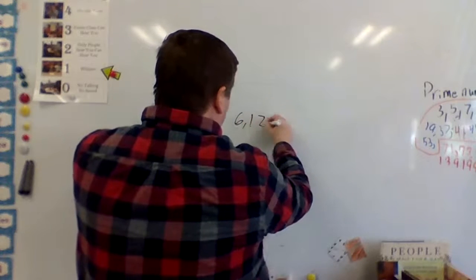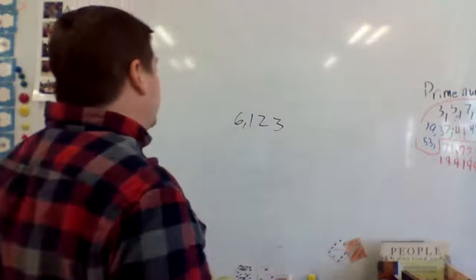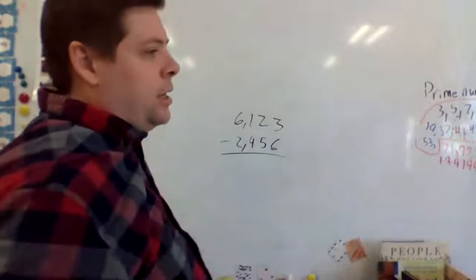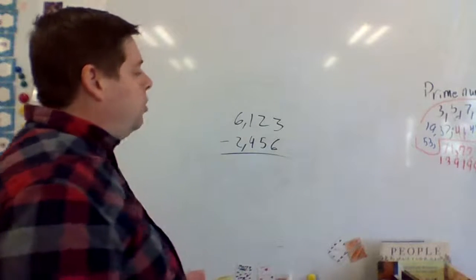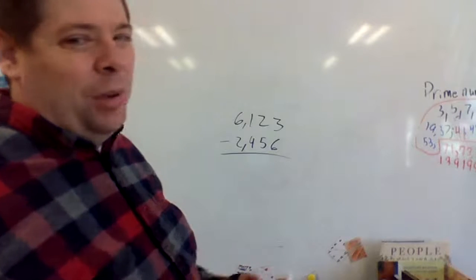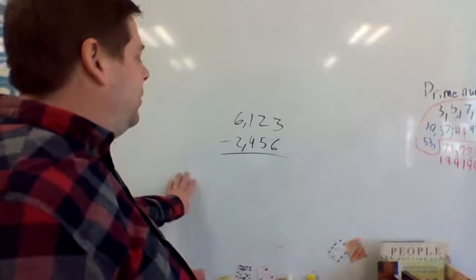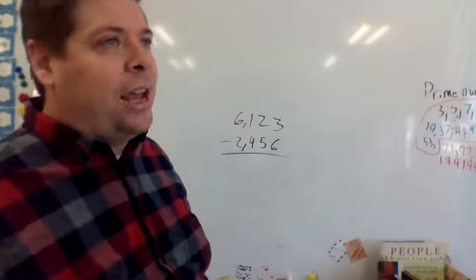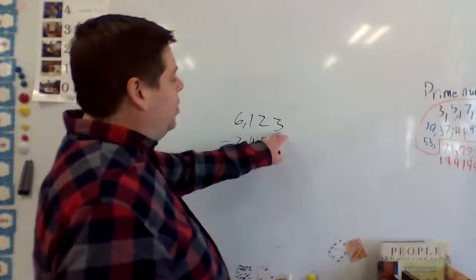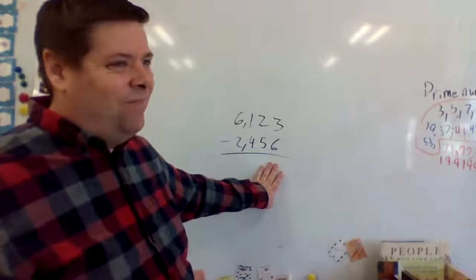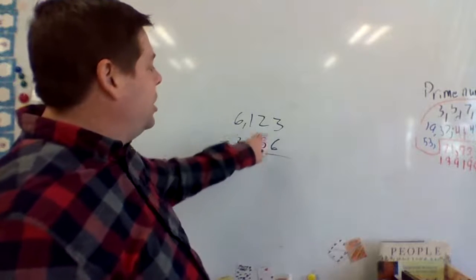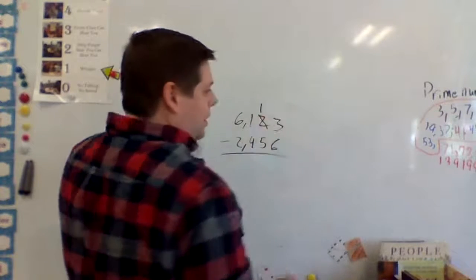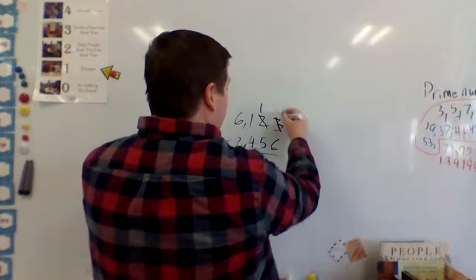So let's say I had 6,123 crayons and I was subtracting 2,456 crayons to give away. What I have to do is regroup some of the values in order to be able to subtract them. Using a little reasoning: if I have 6,000 of something, can I give away 2,000 of that? Yes. So starting off — I have 3. Can I take away 6? I can't, so I have to borrow. I'm going to borrow a group of 10 from my 20.